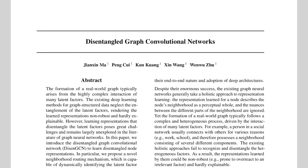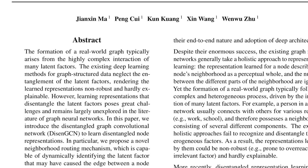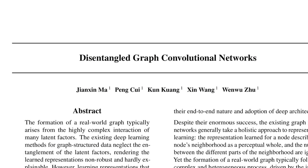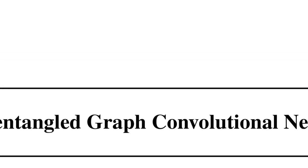Hi there! Today we are discussing the paper Disentangled Graph Convolutional Networks, by Zhang Xin Ma, Peng Kui, Kun Kuang, Xin Wang, and Wenwu Zhu. This is a graph neural network paper that solves an important problem: current methods, until this paper from 2019, were learning node embeddings that were not disentangled.